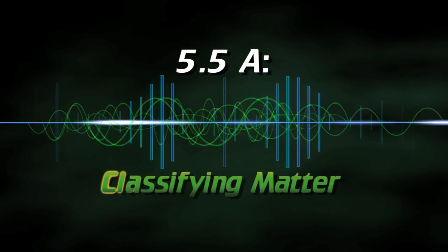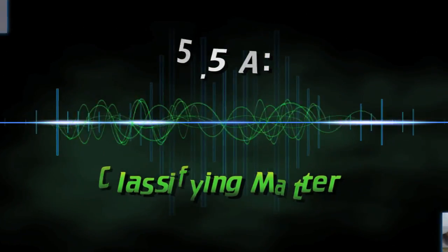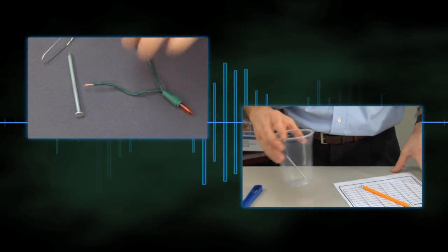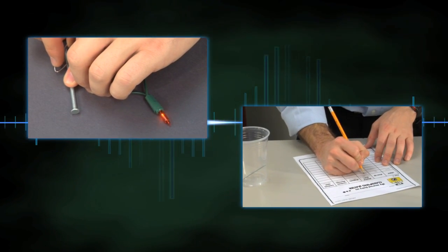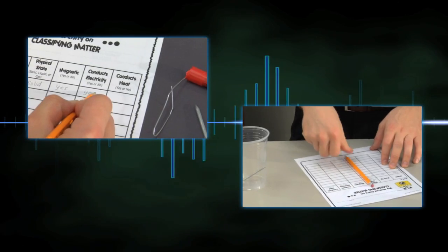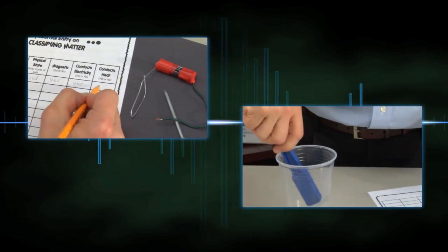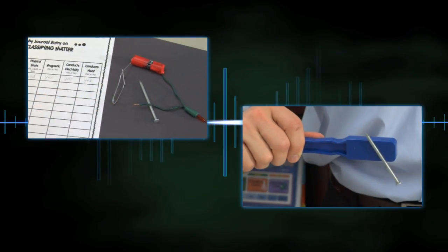5.5a Classifying Matter. In this activity, students test various objects to discover their physical properties, including mass, electrical conductivity, physical state, magnetic attraction, and solubility in water.